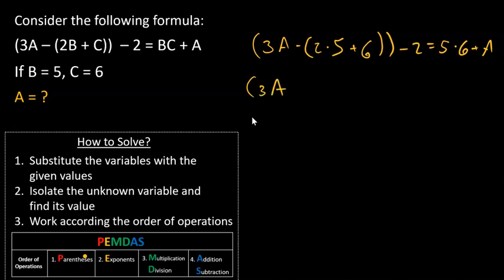So we have 3A minus 10 plus 6, that's 16, minus 2 equals 30 plus A.